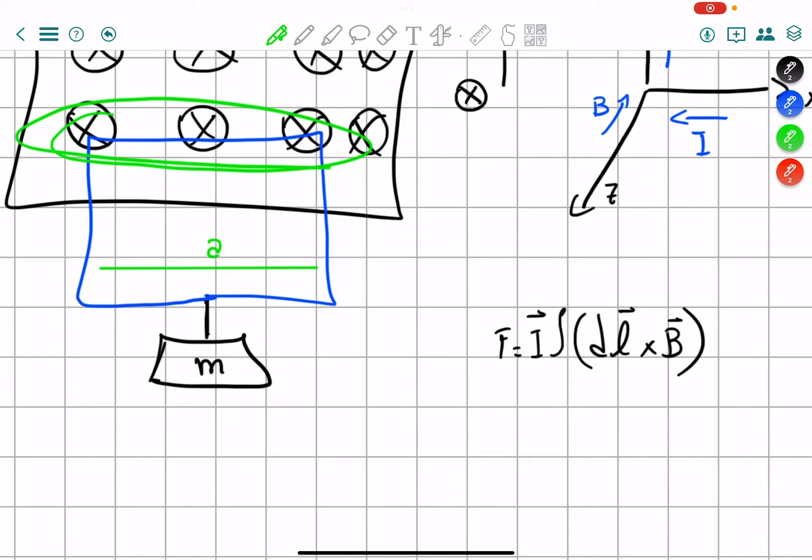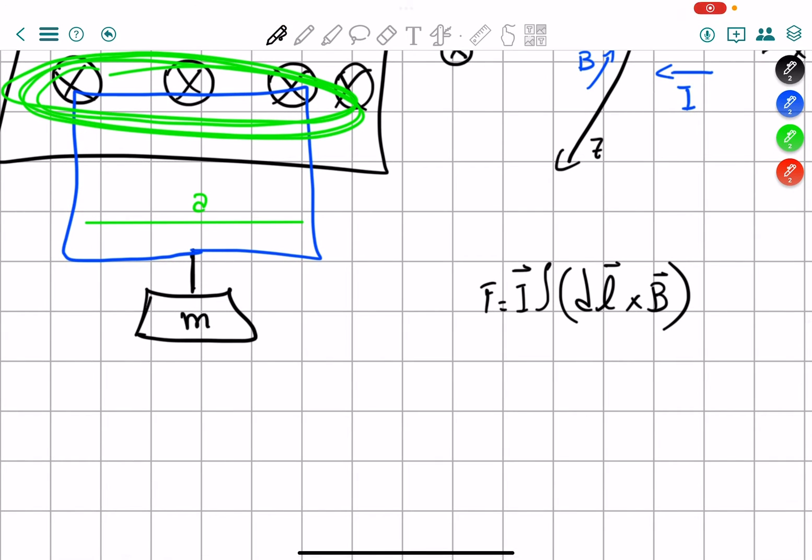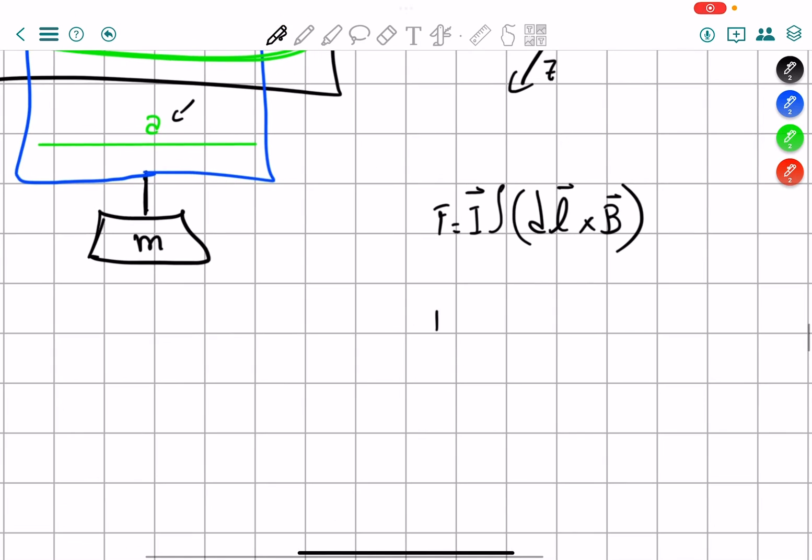We can see that dl that is in the direction that we want is this area, this one right here. This is the section of wire that is going to be used for us. And how long is it? Well, this is equal to a, we just said right here. So we can just say the force is equals to current times the magnetic field times a. This is it. This is how easy it is.